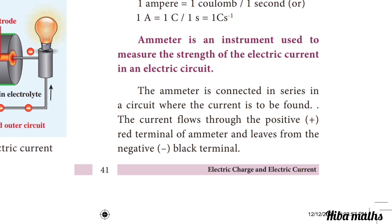An ammeter is an instrument used to measure the strength of electric current in an electric circuit. We use it to measure the amount of current flow. The ammeter is connected in series in the circuit where the current is to be found.